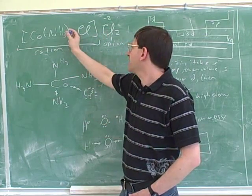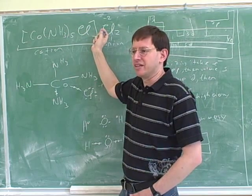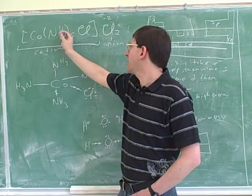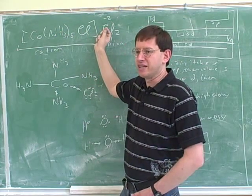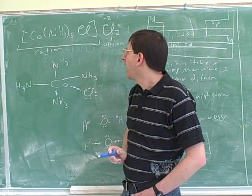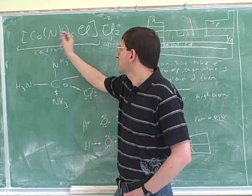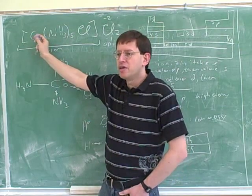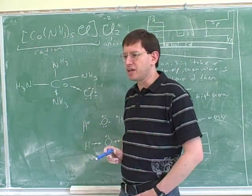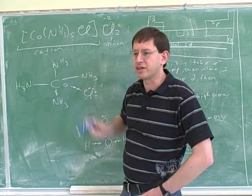So the answer to my question is, what would happen if you put this in solution? The complex ions would separate from the anions. If they're dissolved, they wouldn't be close to each other anymore. They'd just be floating around separately. However, these things would not dissociate from the cobalt because these are covalent bonds. And generally, when you dissolve something, it's the ionic bonds that break and not the covalent bonds.